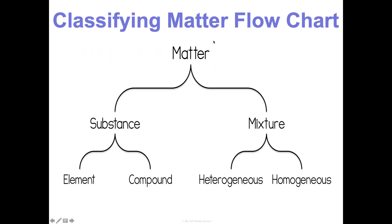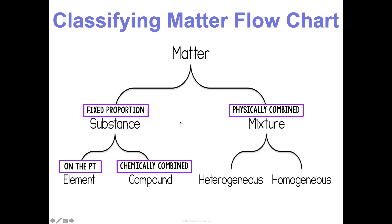And I like to summarize all this in a flowchart. I find this the easiest way to kind of remember the differences and keep it all organized. Remember, all matter can be a substance or a mixture. Substances are in fixed proportions. Substances can be elements on the periodic table or chemically combined elements which make compounds. Mixtures are physically combined. They can be heterogeneous which have different proportions throughout or homogeneous which appear the same throughout. And that is your brief overview of the classification of matter.